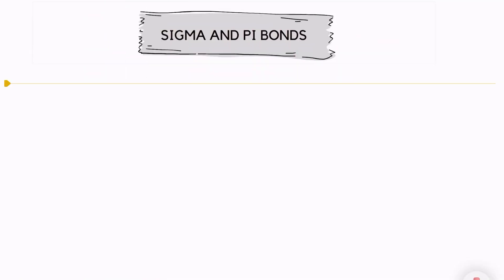Hi, welcome back. In this video, I'm going to go over the difference between sigma and pi bonds, and the difference is found in the way that the orbitals overlap with each other.